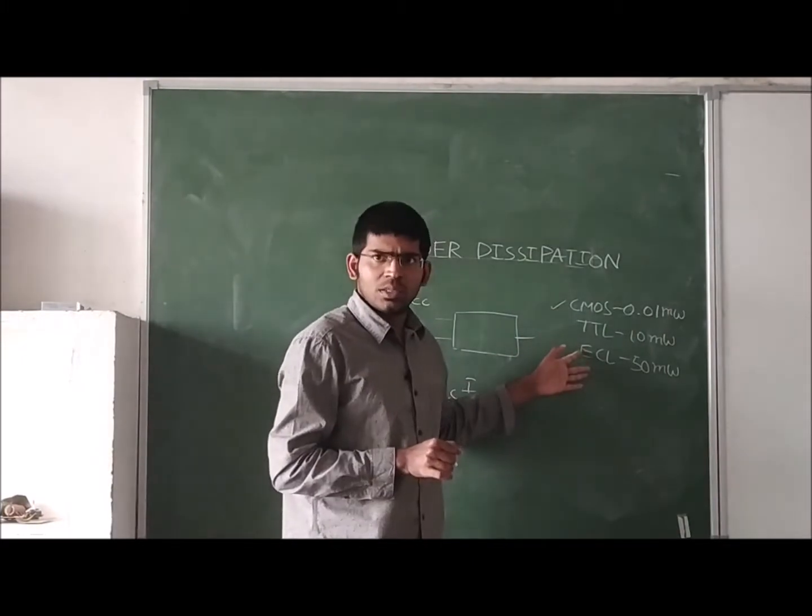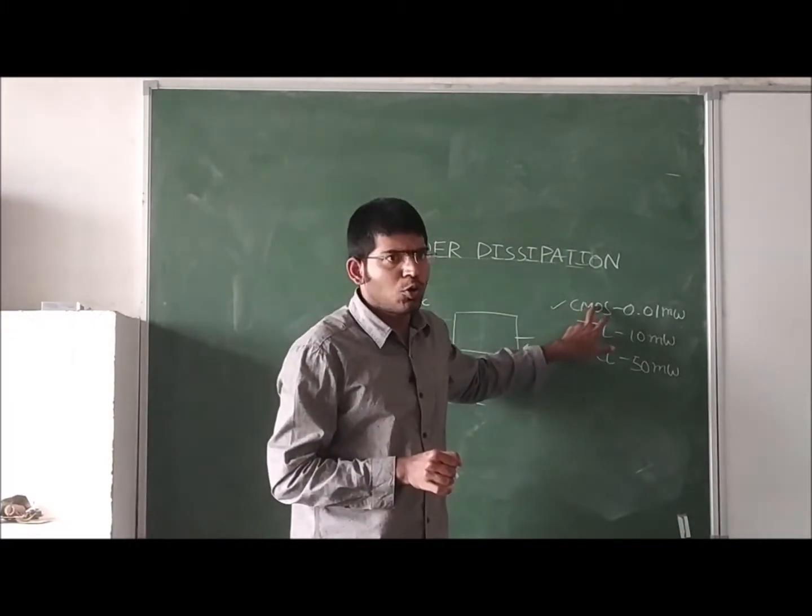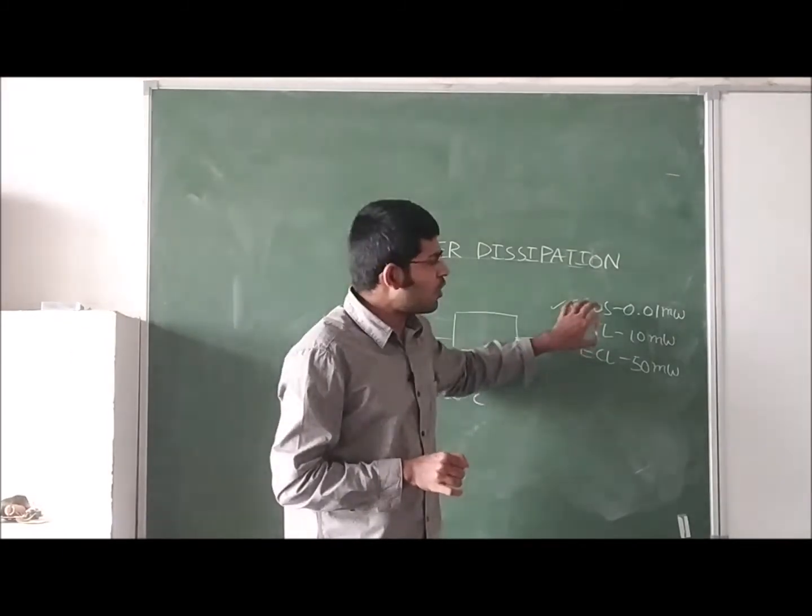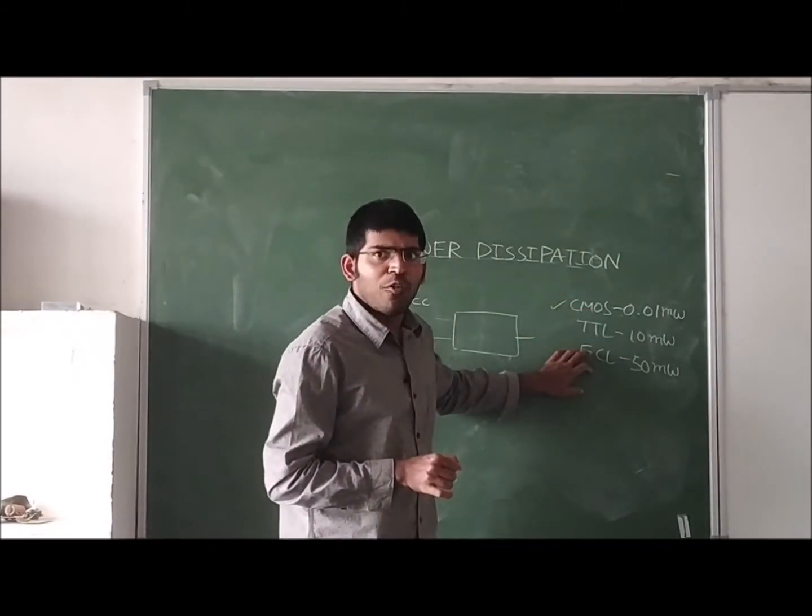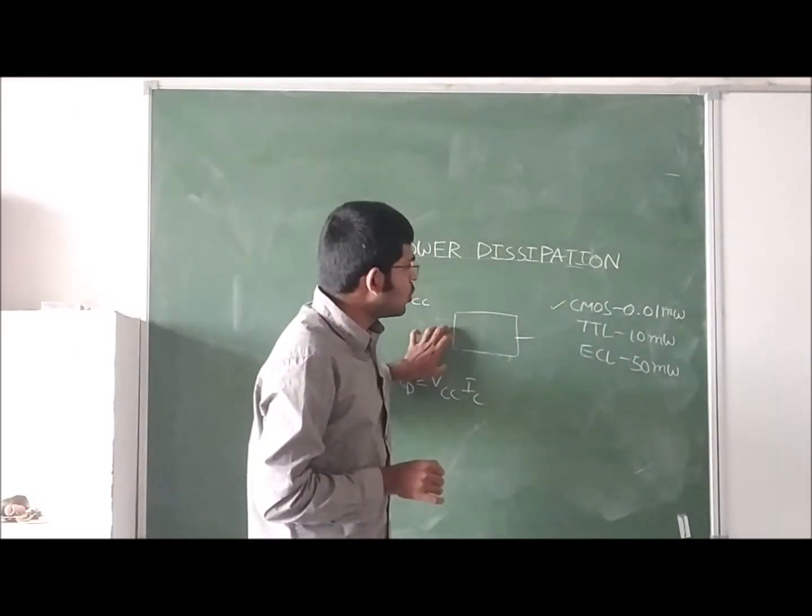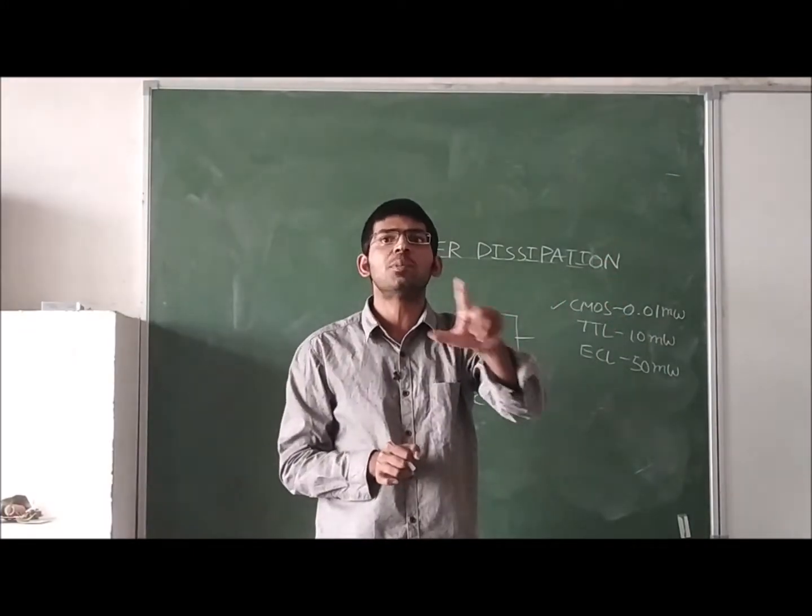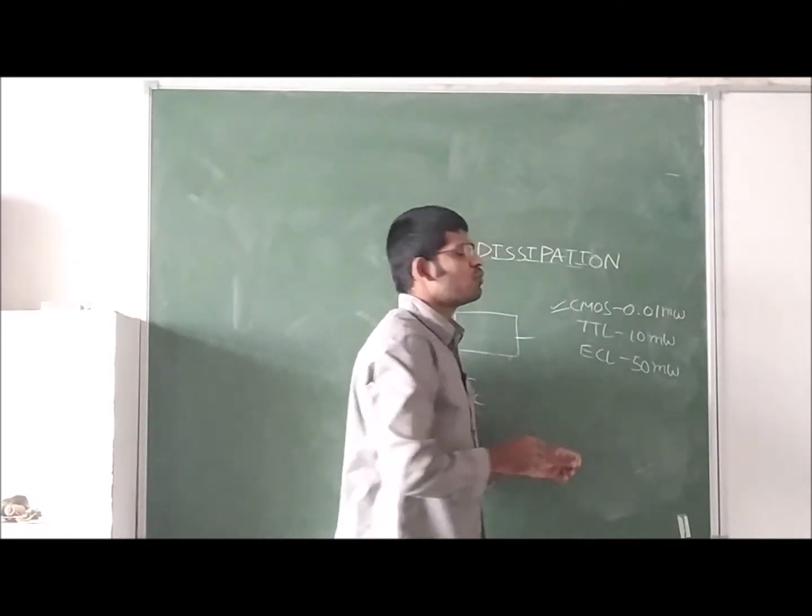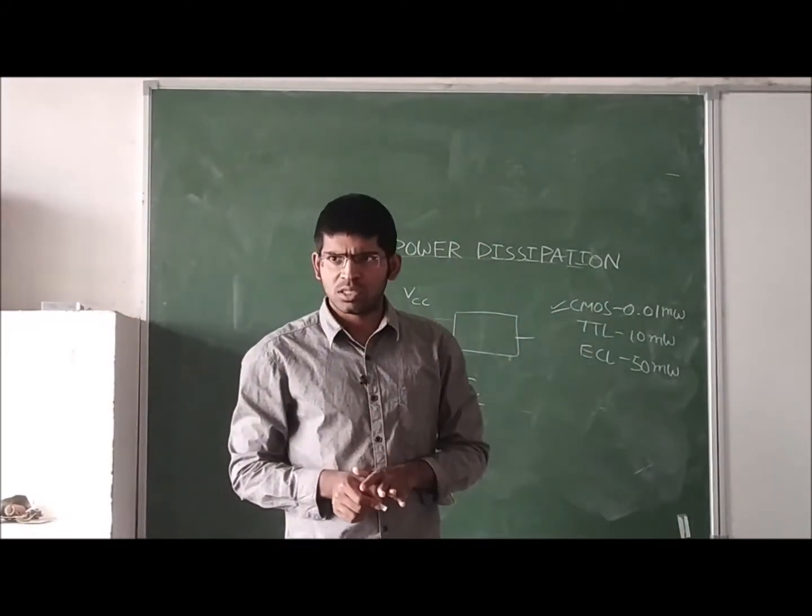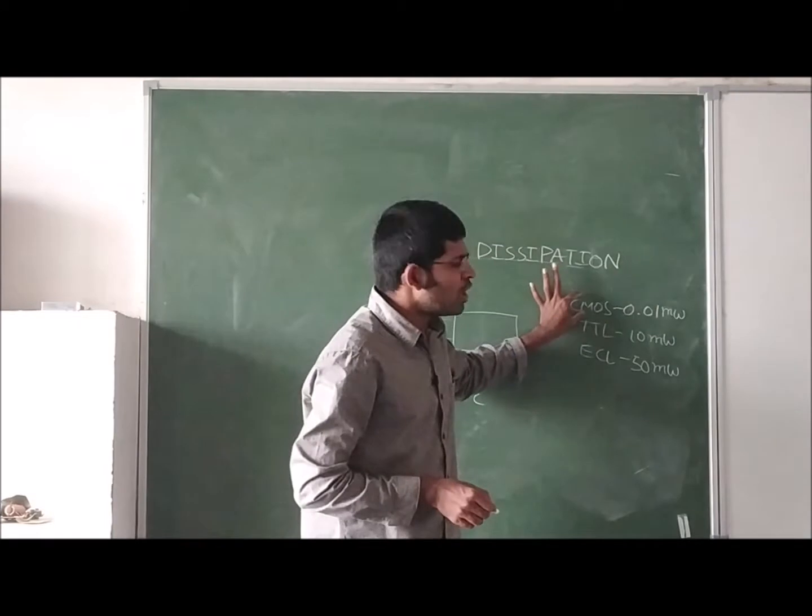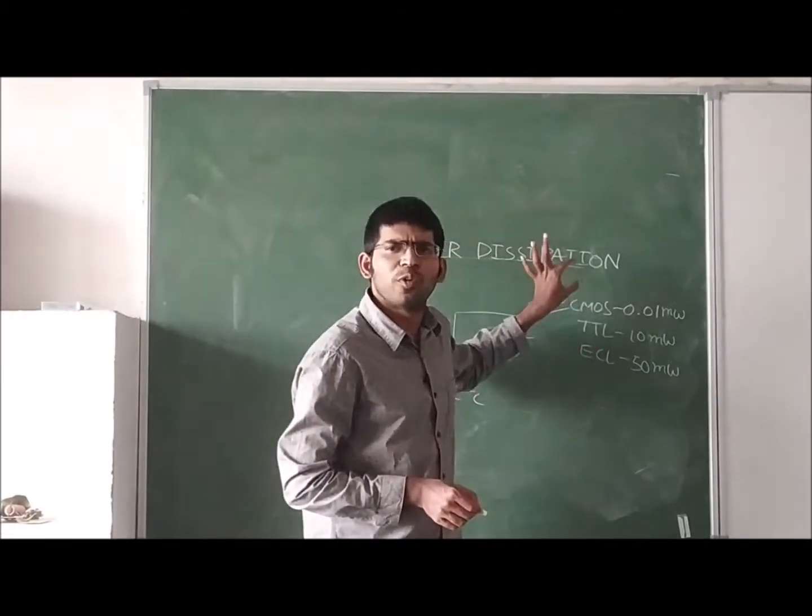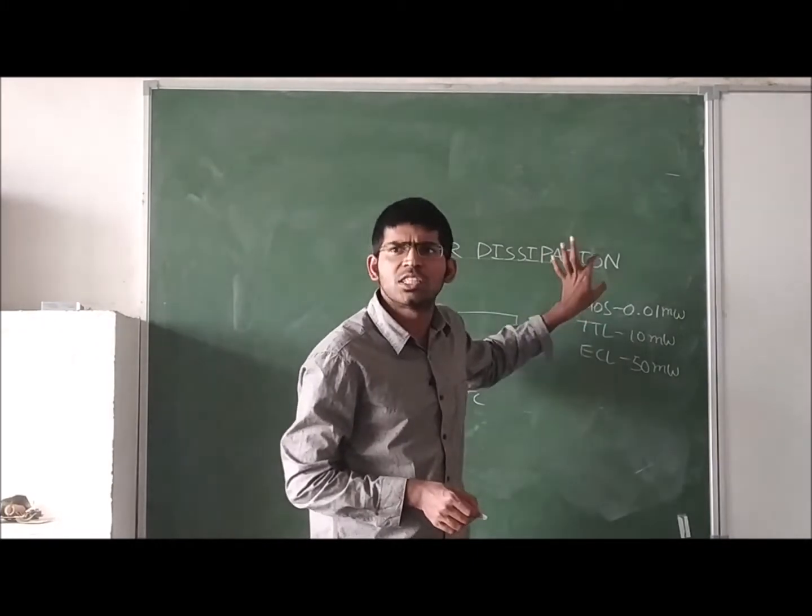There are three technologies: CMOS technology in the unipolar, TTL, and ECL that we have seen. Out of these three, when your digital logic circuit is fabricated using CMOS, then the power dissipation is very less. This is in the range of 0.01 milliwatts. So it takes very less amount of supply - power consumption is very less, power dissipation is very less.